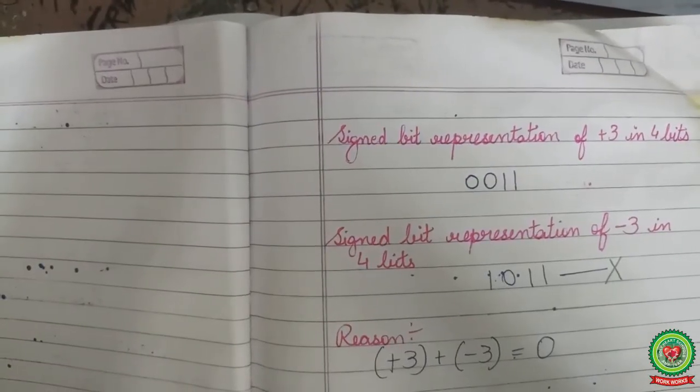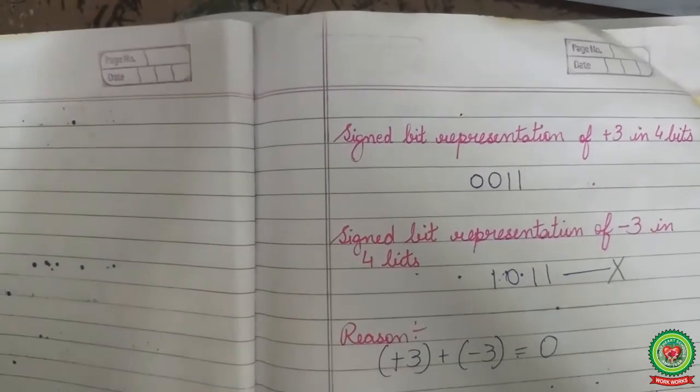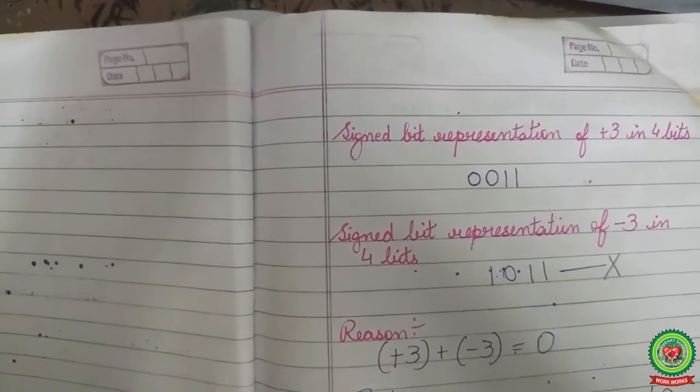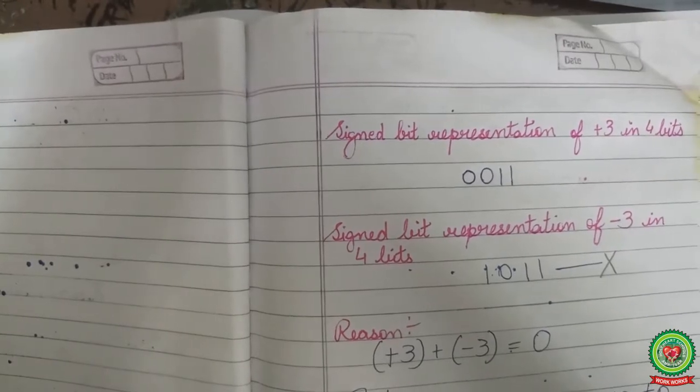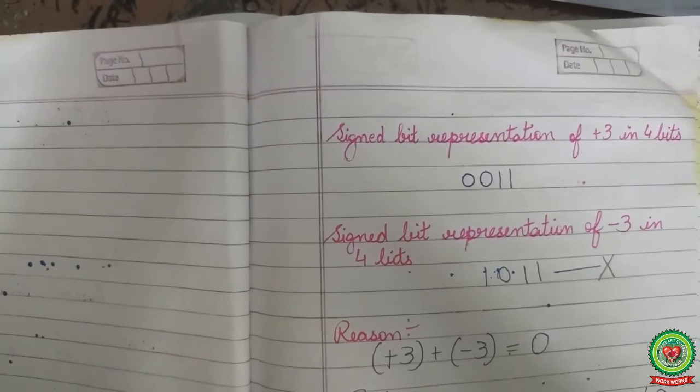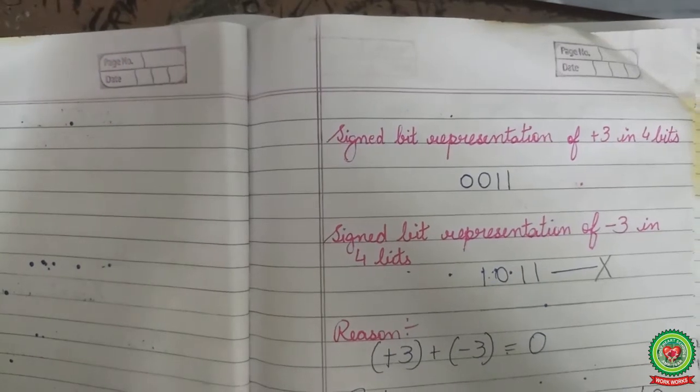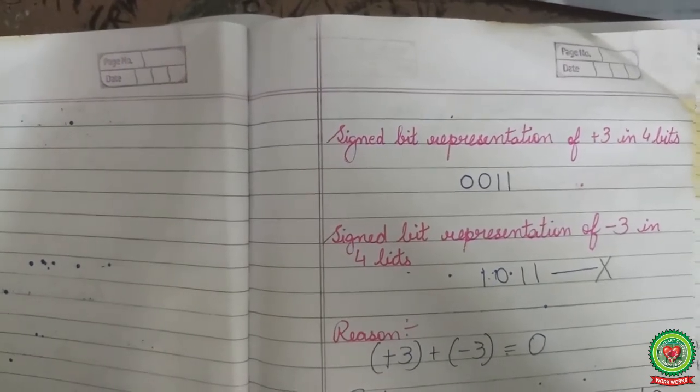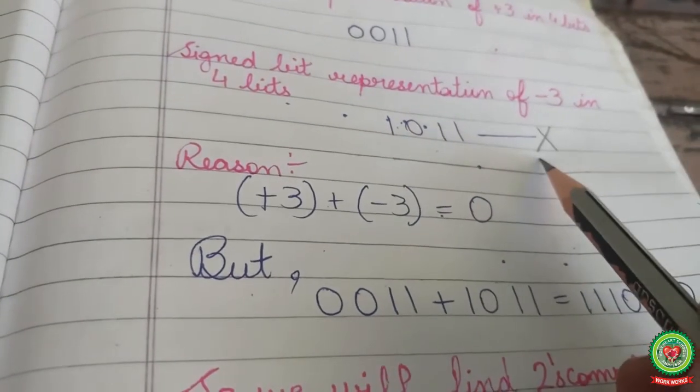Let us consider an example. Sign bit representation of plus 3 in 4 bits is 0011. Sign bit representation of minus 3 in 4 bits, according to the logic that 1 is for negative number, it should be 1011. But this is wrong. Why?